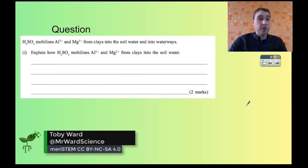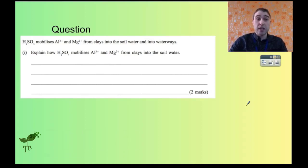Now we'll look at some questions. Sulfuric acid mobilizes aluminium and magnesium ions from clays in the soil water and into waterways. Explain how sulfuric acid mobilizes aluminium and magnesium ions from clays into the soil water.